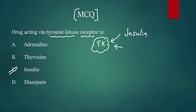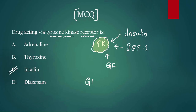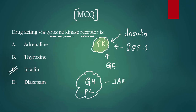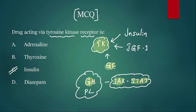Growth factors like insulin-like growth factor 1 (IGF-1) and other growth factors leading to cancers — like epidermal growth factor and vascular endothelial growth factor — all act through tyrosine kinase receptors. Don't confuse growth hormone with growth factor: growth hormone and prolactin act through the JAK-STAT pathway.